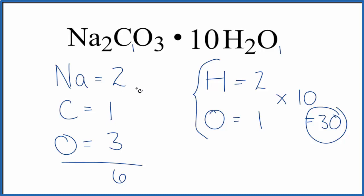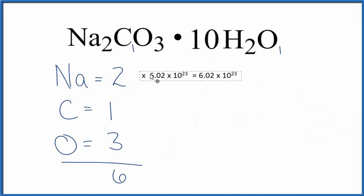Finally, if you were asked to find the number of atoms in 1 mole, say how many sodium atoms are in 1 mole of sodium carbonate decahydrate, you'd take the number of atoms. So we have 2 sodium atoms here, and multiply that by Avogadro's number. So we'd have 2 times Avogadro's number, and that would give us the number of sodium atoms in this compound here.